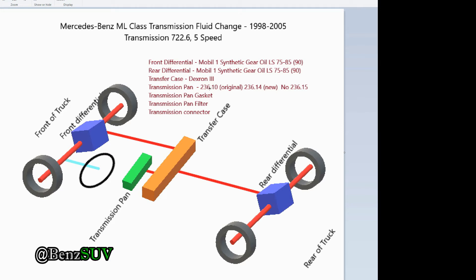It's very difficult to find the 236.10 these days. Note that the 236.15 is blue in color, so it's highly not recommended and it's not backward compatible. We'll be using the 236.14 spec for the transmission fluid.